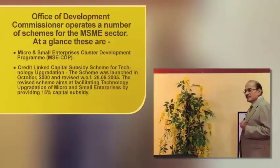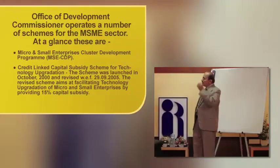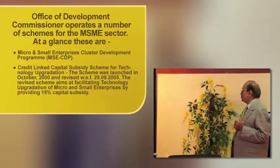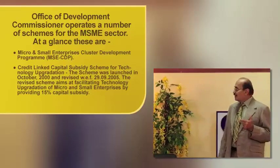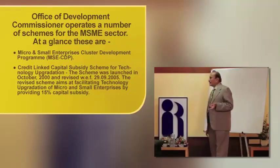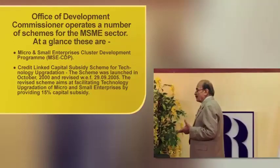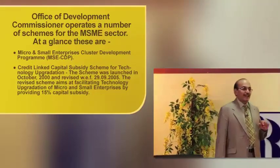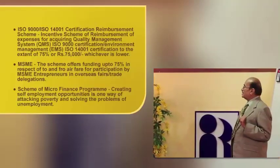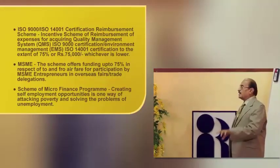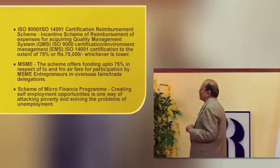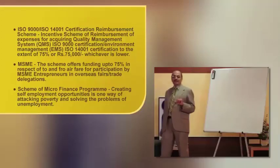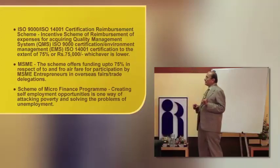Another initiative by the government is the Credit Linked Capital Subsidy Scheme for Technology Upgradation, launched in 2000 and revised with effect from September 2005. It aims at facilitating technology upgradation for micro enterprises by providing 15% capital subsidy. The next initiative is the guarantee scheme already discussed. There is also a scheme for ISO certification — the fees paid for getting this certification are reimbursed by the government to the extent of 75% or a maximum of rupees 75,000.